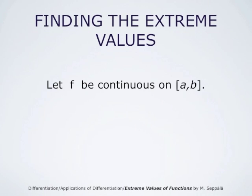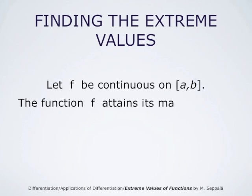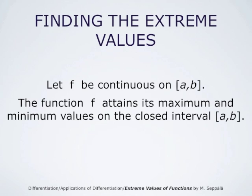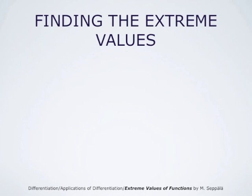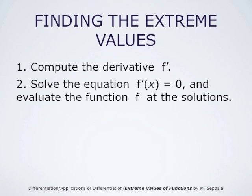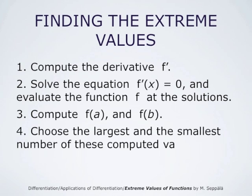A function f which is continuous on a closed interval from a to b attains its maximum and minimum values. If f is further differentiable on the open interval from a to b, we may use differentiation to find these extreme values. The steps are: first compute the derivative f', then solve the equation f'(x) = 0 and evaluate the function f at the solutions; next compute f at a and f at b; and finally choose the largest and smallest of these computed values of f — those are the extreme values of f on the interval from a to b.